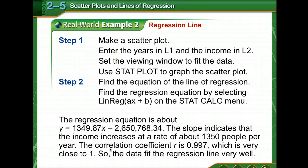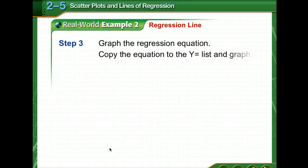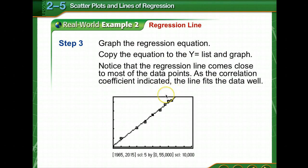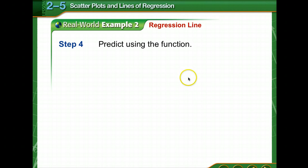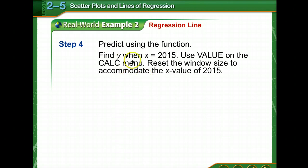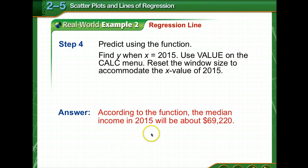So these are things you're going to do on the calculator. Then you graph the regression line. So you're going to go to your y editor for those of you that have already been graphing. And then you're going to make a prediction using the function that you came up with. So you're going to find y if x is 2015. So according to the function, the median income in 2015 will be about 69,220.